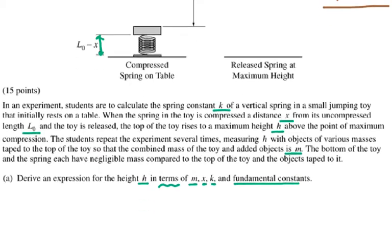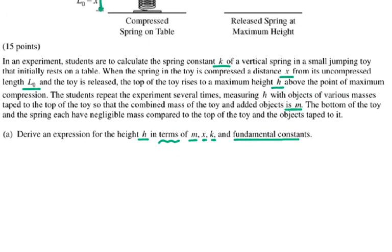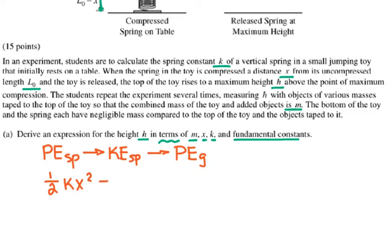So I'm gonna say the potential energy of the spring is gonna be converted to the kinetic energy of the spring after its compression is done, and all that kinetic energy is gonna be converted to the gravitational potential energy. I can skip the kinetic energy because they don't ask me about velocity. So potential energy of the spring equals ½kx² equals mgh. So the formula for h is kx² divided by 2mg.